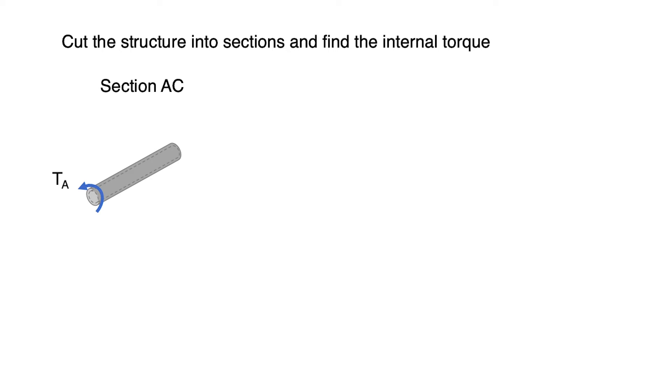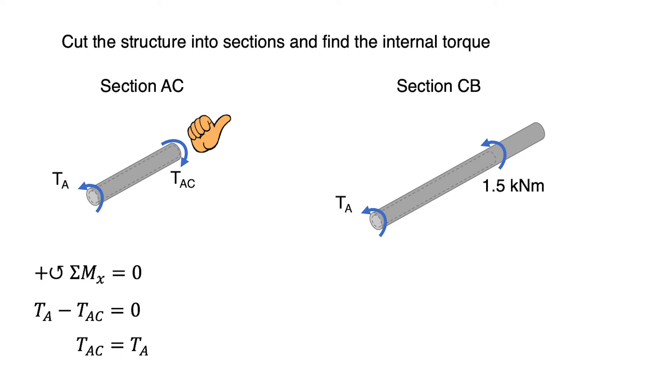Draw the free body diagram of AC. We cut it before point C, then put the reaction torque at the cutting point as TAC. Apply the static equilibrium equation to get the value of TAC in term of TA.